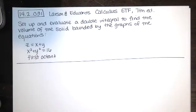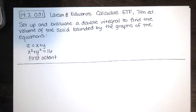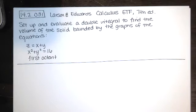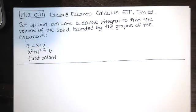In this video we solve homework problem 14.2.031 from the Larson and Edwards Calculus Early Transcendental Functions textbook, 7th edition. The problem says: set up and evaluate a double integral to find the volume of the solid bounded by the graphs of the equations z equals x plus y, x squared plus y squared equals 16, and it's in the first octant.